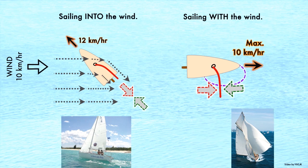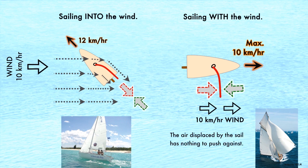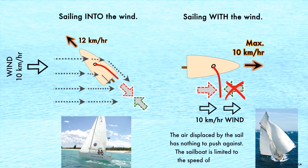When sailing with the wind, the sail is displacing the air in the direction of travel. The air displaced by the sail has nothing to push against. Therefore, no equal and opposite force is possible. The force generated by the sail is limited to the speed of the wind.